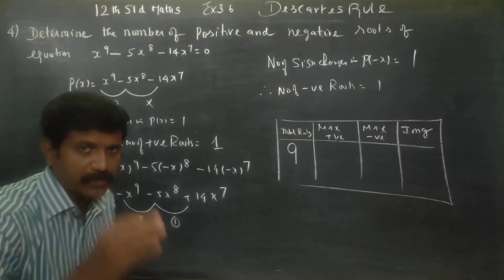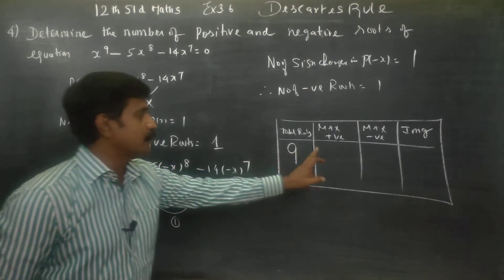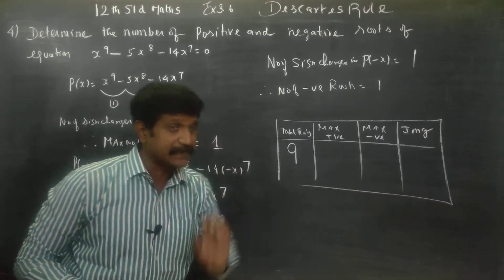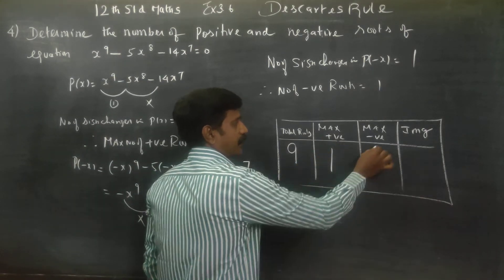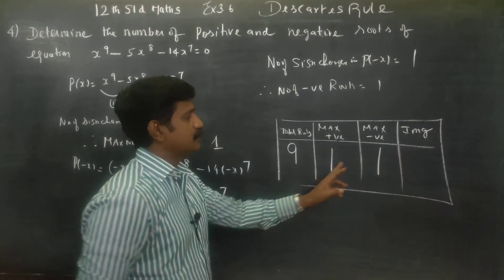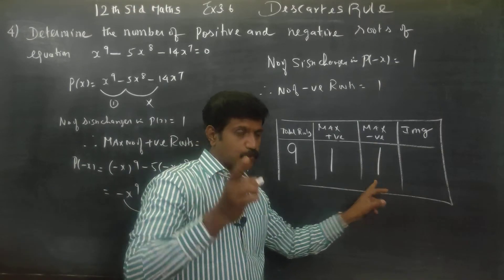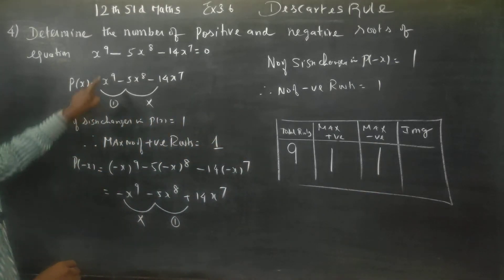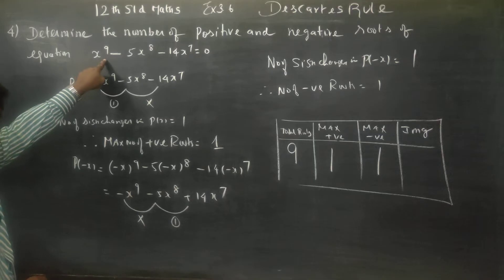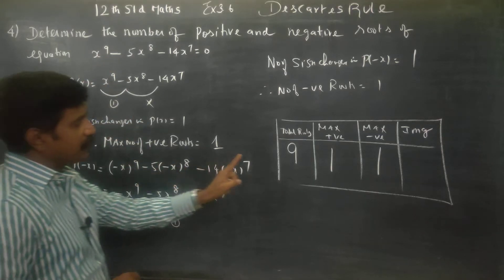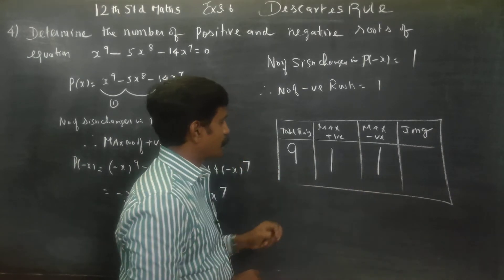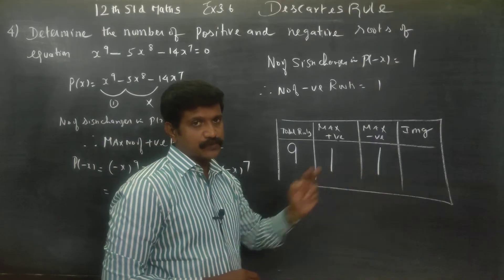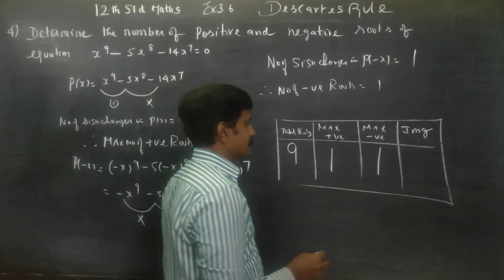This is Descartes' Rule. The rule is: for positive and negative roots, take the maximum count. Imaginary roots occur as conjugate pairs. Maximum positive is 1, maximum negative is 1 — so 1 plus 1 is 2. The power is 9, so 9 minus 2 gives 7 imaginary roots.